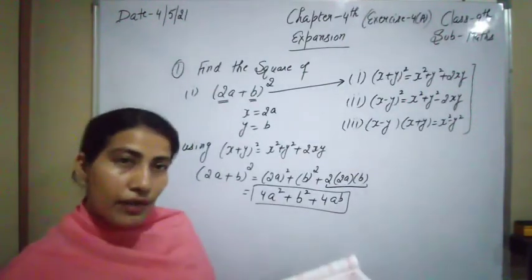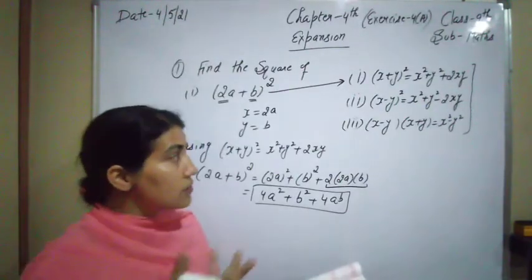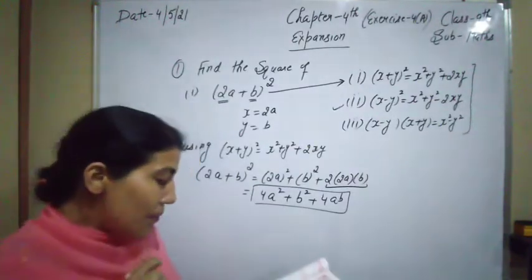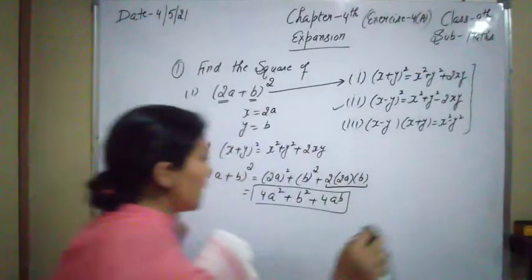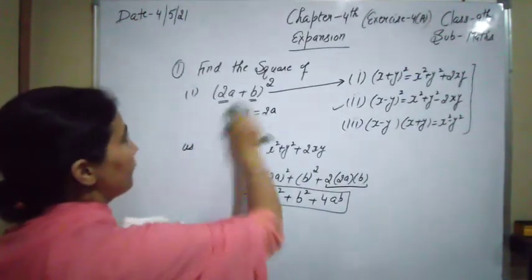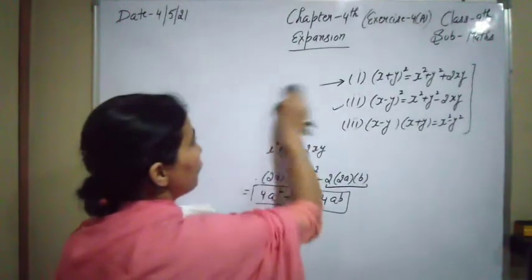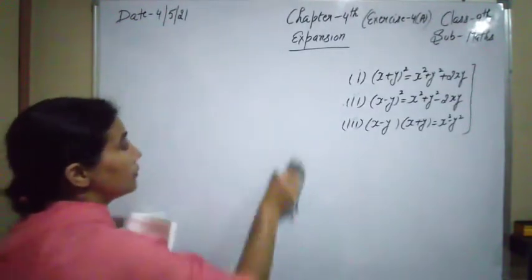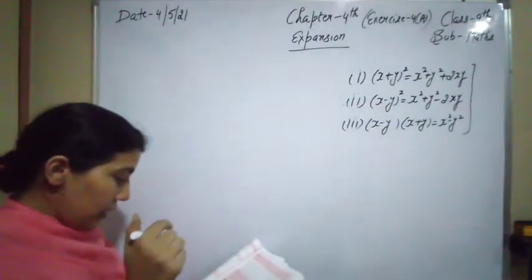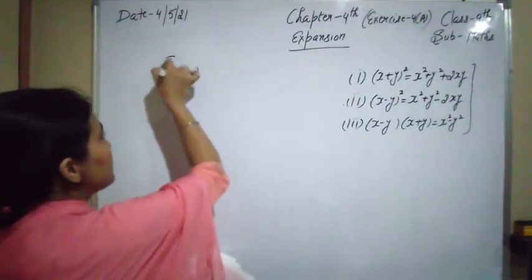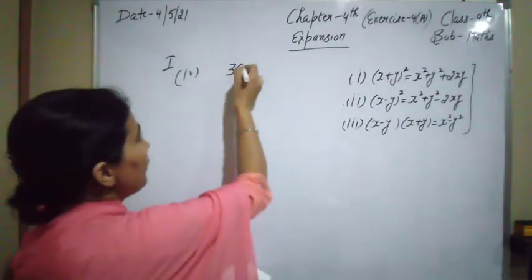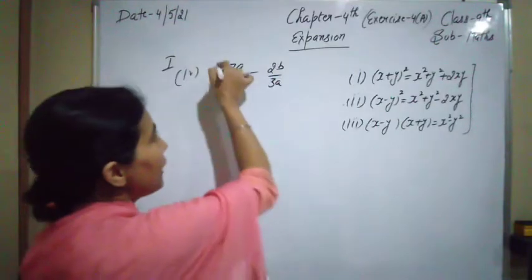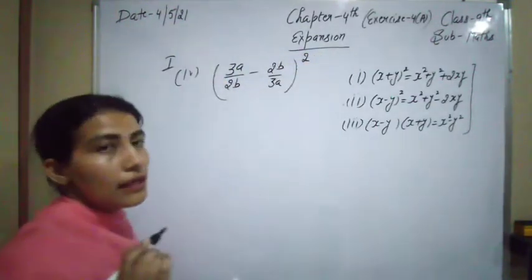The second and third parts are similar to the first one. In the third part you have to use the (x − y)² identity. Now in the fourth part, we have to calculate the square of (3a/2b − 2b/3a)².